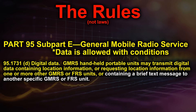If you're operating under Part 95 as GMRS, your data options are limited to containing a brief text message or location data from GMRS to GMRS unit. There's also a one-second time restriction on data transmissions, as well as specific intervals limiting how much data can be transmitted in a given period of time. You can look up the Part 95 rules and do your homework on that.